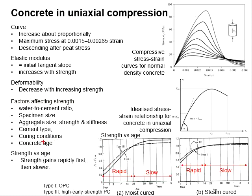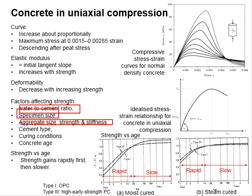These are the factors affecting the concrete strength: the water to cement ratio, specimen size, aggregate size, strength and stiffness, cement type, curing conditions, and concrete age.